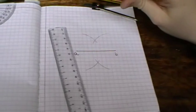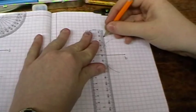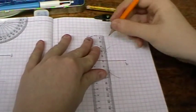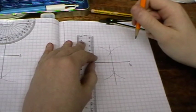Join the point of intersection with the ruler. We have constructed the perpendicular bisector of AB.